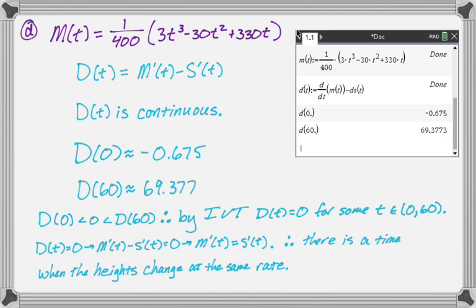So that's the entire question. It was pretty straightforward. Part D was a little unique, but they walk you through it step by step. They even tell you to use the intermediate value theorem. So I hope you found this helpful. And good luck.